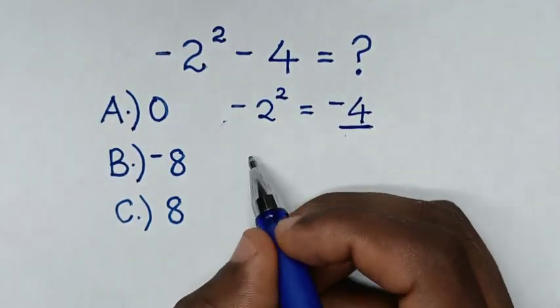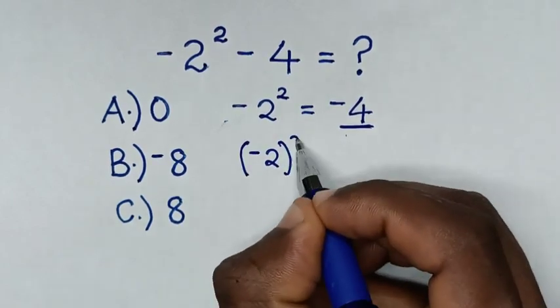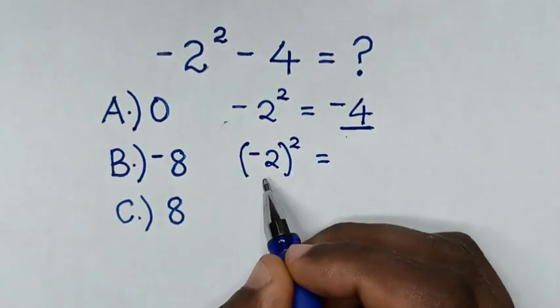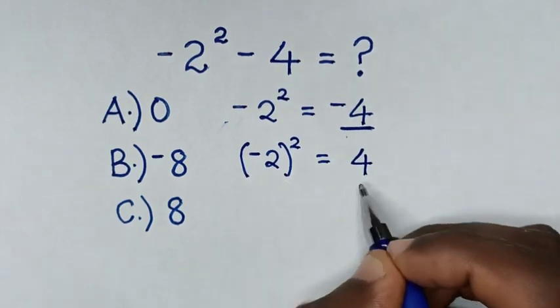But when it is negative 2 in brackets squared, it will be equal to negative 2 times negative 2, which is positive 4.